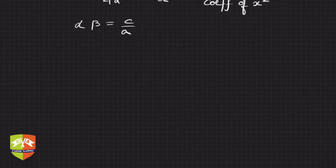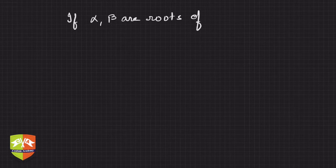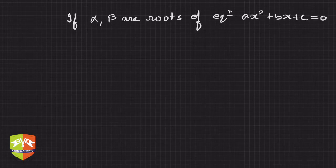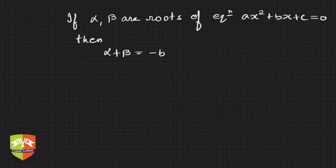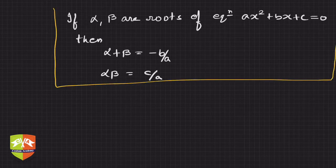To summarize: if alpha and beta are roots of the equation ax² + bx + c = 0, then alpha + beta = -b/a, and alpha × beta = c/a. This is a very important result to remember at all times.